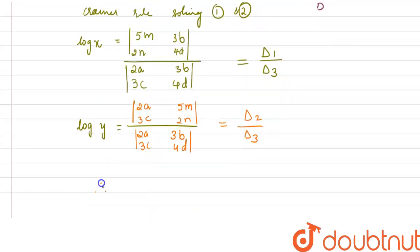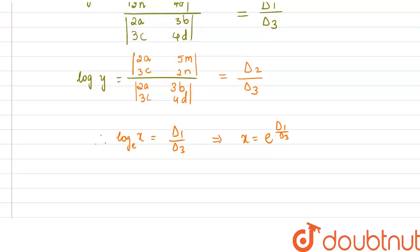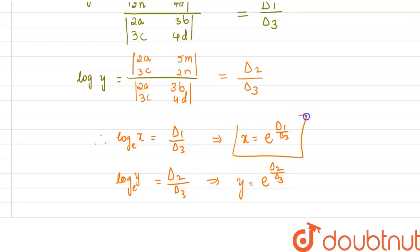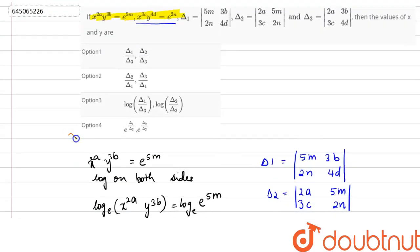Therefore, log_e(x) = δ1/δ3, which implies x = e^(δ1/δ3). And log_e(y) = δ2/δ3, which implies y = e^(δ2/δ3). These are our values of x and y. This satisfies option D: x = e^(δ1/δ3) and y = e^(δ2/δ3). Thank you.